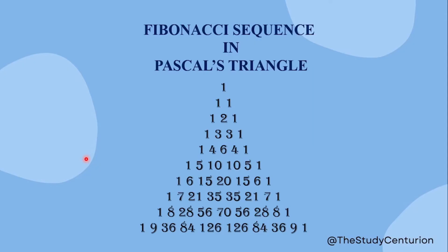Pascal's Triangle starts with the number 1. It starts with one on both the left and right sides. So we have 1 on each side. Then the rows build up: 1, 1, then 1, 2, 1 — because 1 plus 1 is 2.